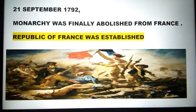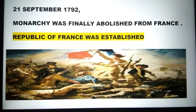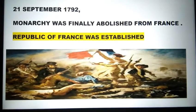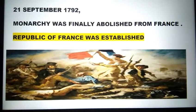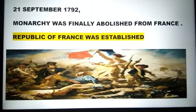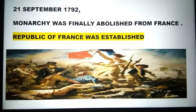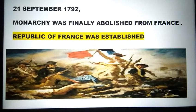On 21st September 1792, monarchy was finally abolished from France, and France was established as a Republic. In a Republic, the head of the government is chosen from among the people.